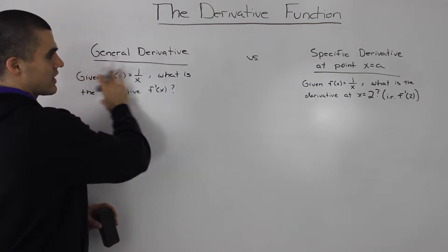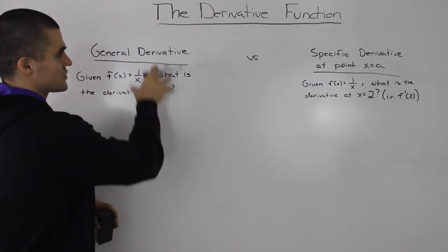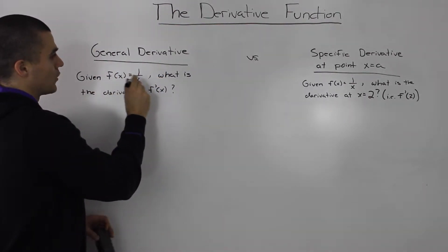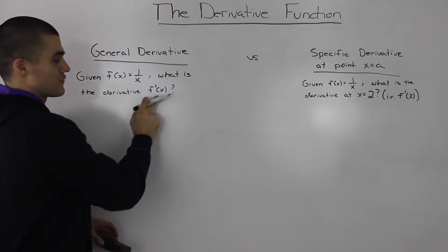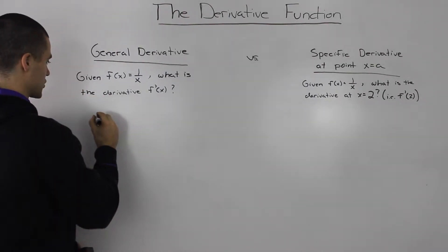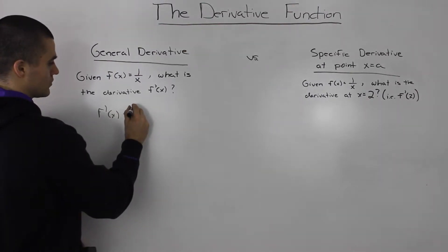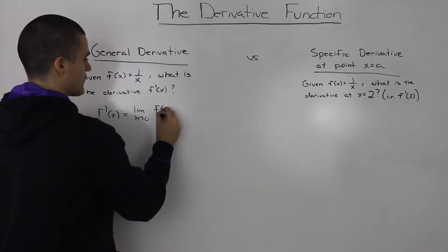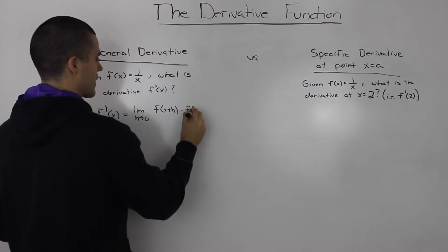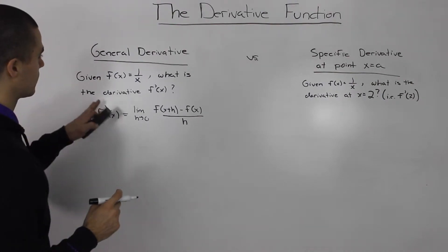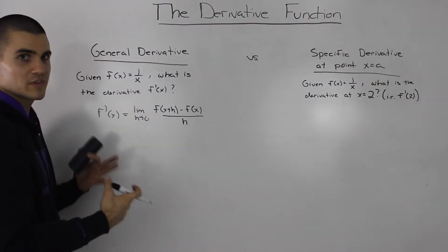So if you see, I gave you two kinds of questions for each type. So let's start with this general derivative here. Given f of x equals 1 over x, what is the derivative f prime of x? Well, as we mentioned in the derivative function overview, f prime of x can be found using the difference quotient formula: f of x plus h minus f of x, all over h. And notice that they're not asking for the derivative or the slope of the tangent at a specific point.